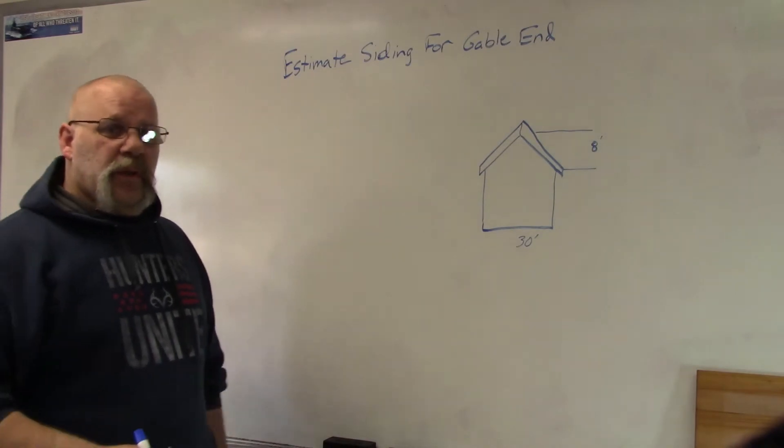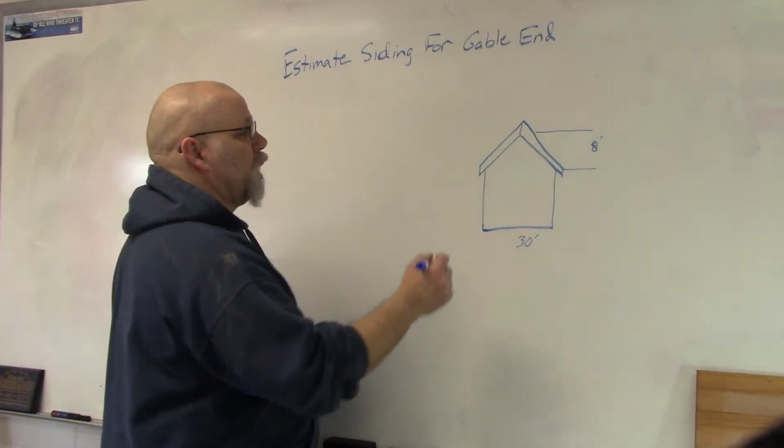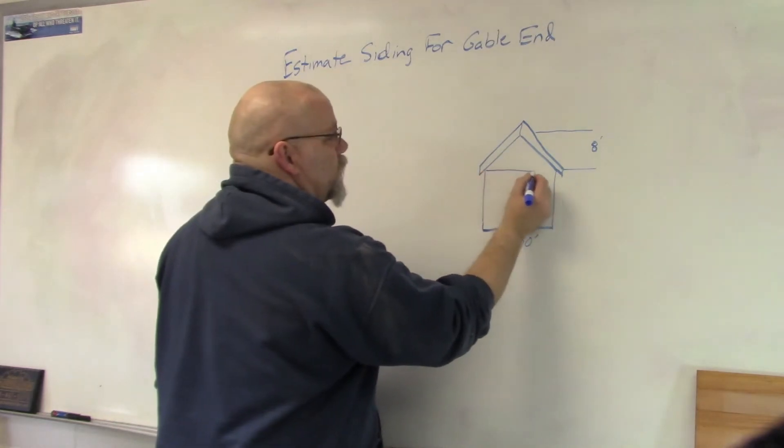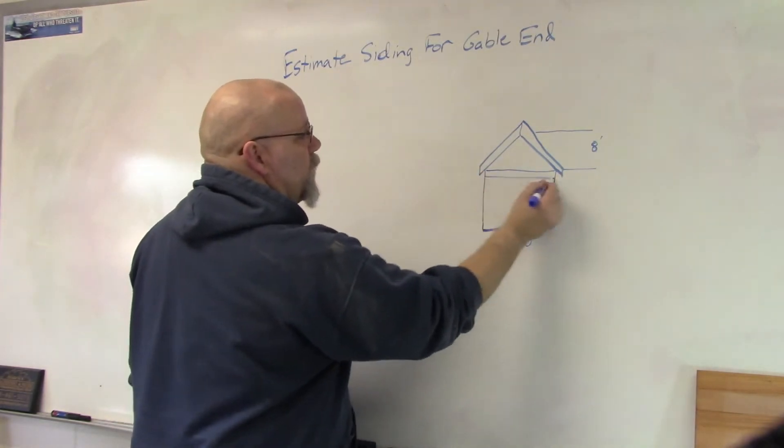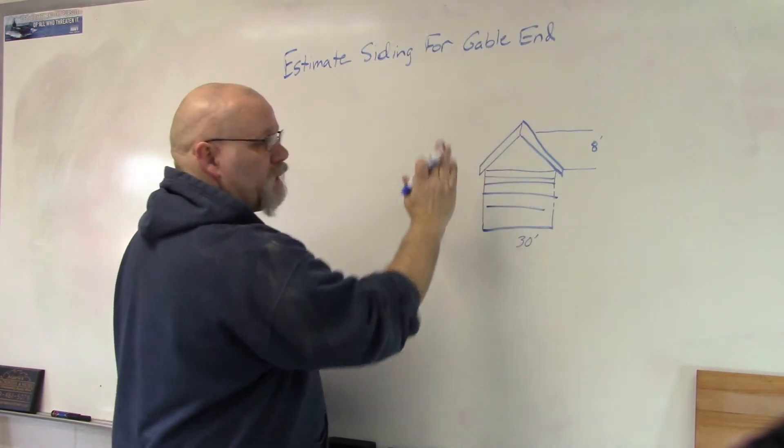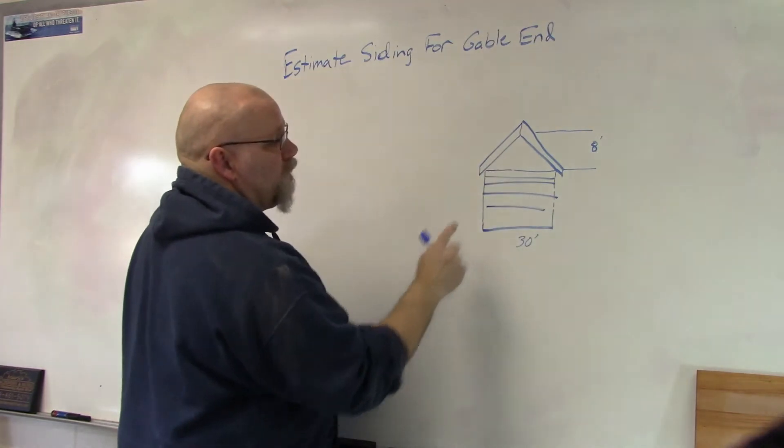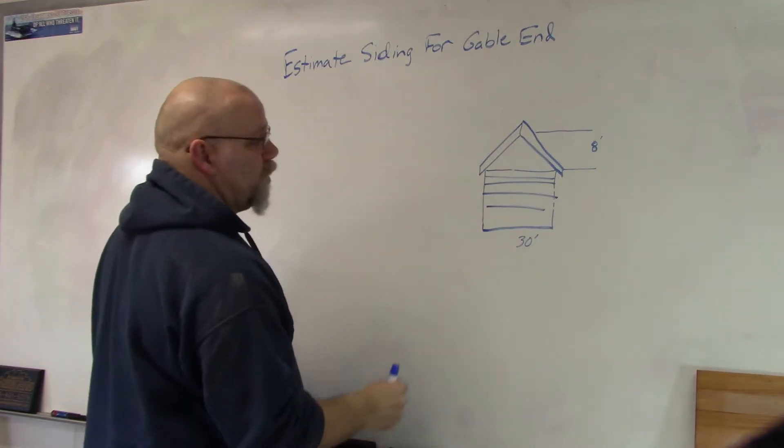Okay, in this video I'm going to show you how to estimate siding for a gable end. A gable end is that part of the roof, so here's my regular siding goes up here, and then I want to finish siding all the way up to the peak. So how much siding goes in this section?